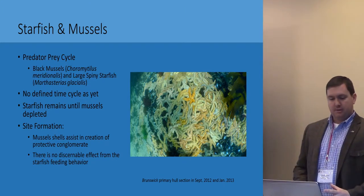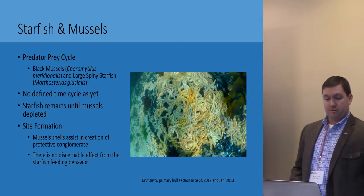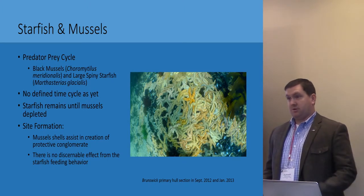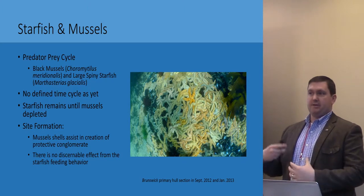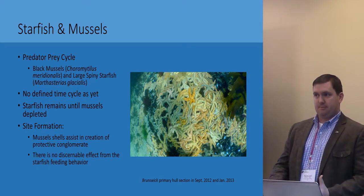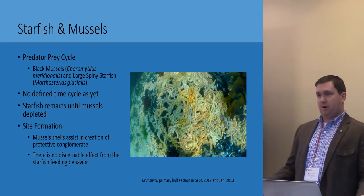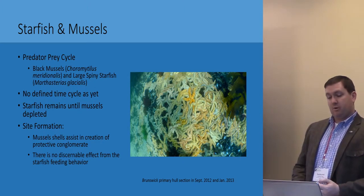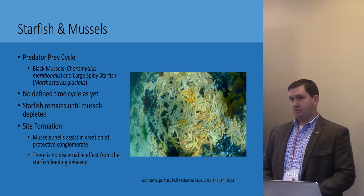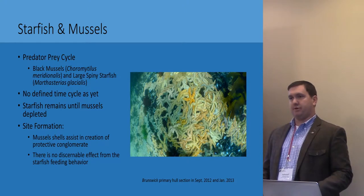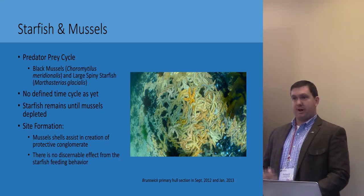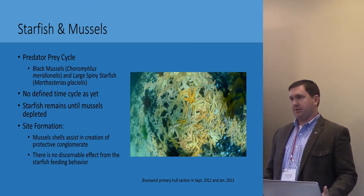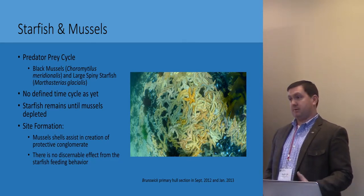As far as site formation goes, the mussel shells can assist in forming a protective conglomerate over the vessel. But we haven't really discerned any effect on the starfish feeding behavior. When the starfish are feeding, they actually pull the mussel open and then turn their stomach inside out, put it inside the mussel, dissolve the mussel, pull it back in, and move on to the next one. The mussel shells will fall apart, and as the wave action goes on, the shells get broken up and form this conglomerate. Unlike what some people have written about zebra mussels in the Great Lakes, there's no time for these mussels to form any bacteria-laden mat underneath the colony. Since you have this constant eating and rebuilding of the mussels, there's no time for this mat to form, which could increase degradation by eating the copper or the iron artifacts, because mussels really like to live on iron.